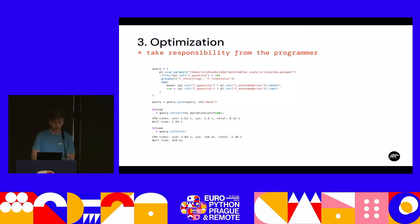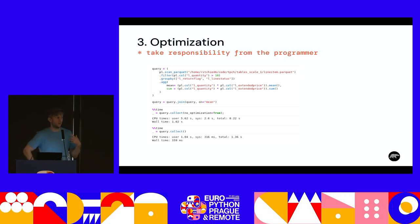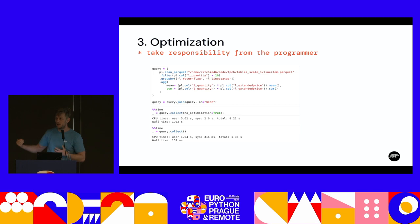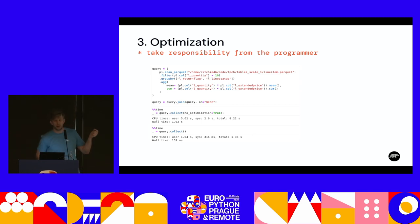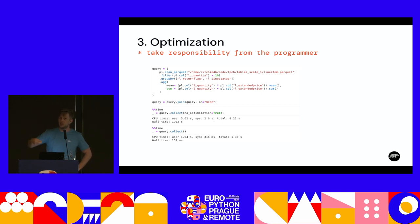The second thing you get from Polars if you use it idiomatically is optimization for free. We take this responsibility from the programmer — there are optimizations you as a programmer could have done but often don't, because you just want to write your query readably. For instance, you don't want to specify in a scan parquet which columns you need. In Polars, we automatically figure out which columns you need and which predicates to push down. If you do a filter, we look at the parquet statistics and check if we can skip a row group, and we apply filters at scan level so we don't materialize as many rows.